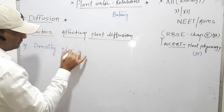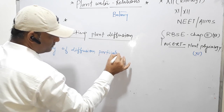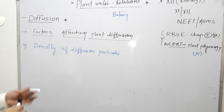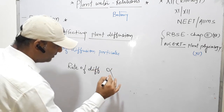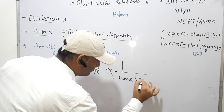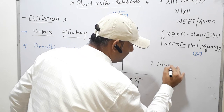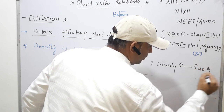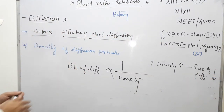The second factor is the density of diffusion particles. The rate of diffusion is inversely proportional to the density of particles. So when density is high, the rate of diffusion is low. When density is low, the rate of diffusion increases.